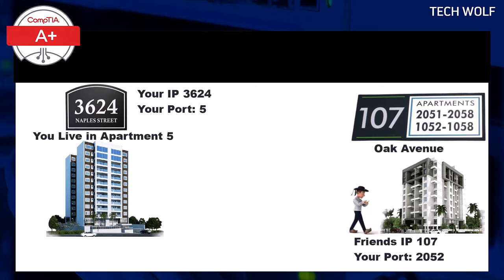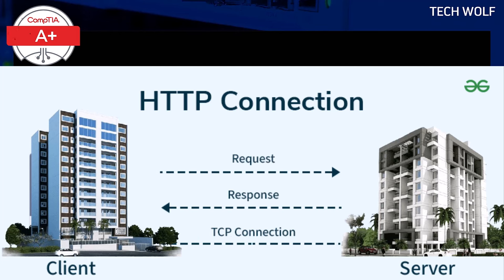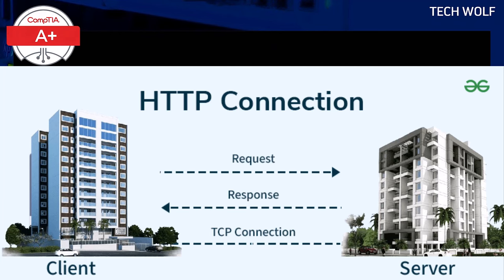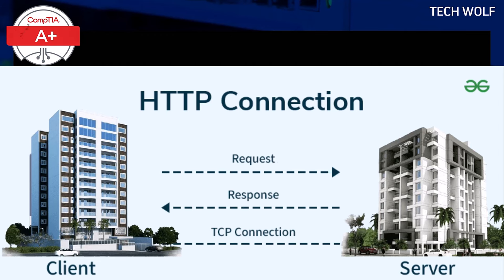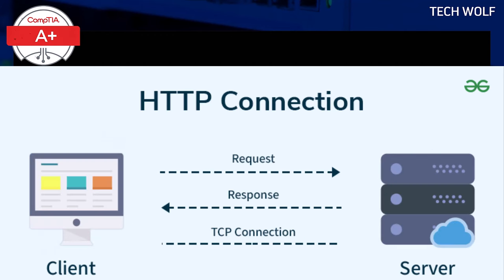For example, apartment 107's doorbell — your friend's place — could be compared to port 80 in networking, which is often used for websites via HTTP, or Hypertext Transfer Protocol. And apartment 6's doorbell might be like port 443, which is used for secure websites via HTTPS.